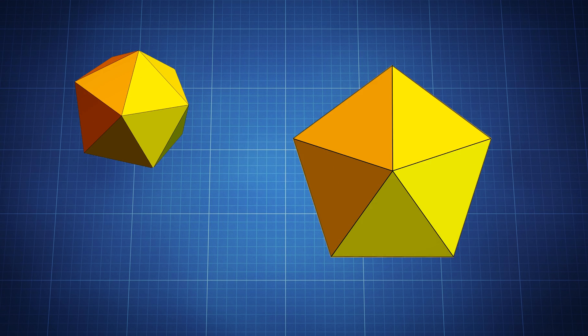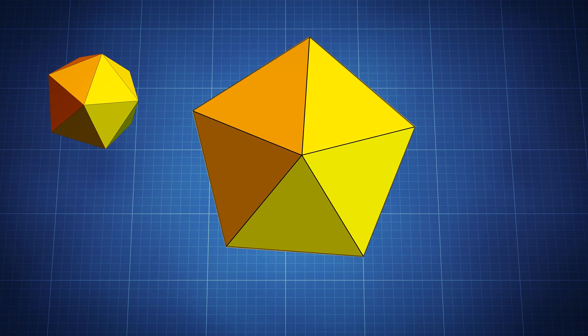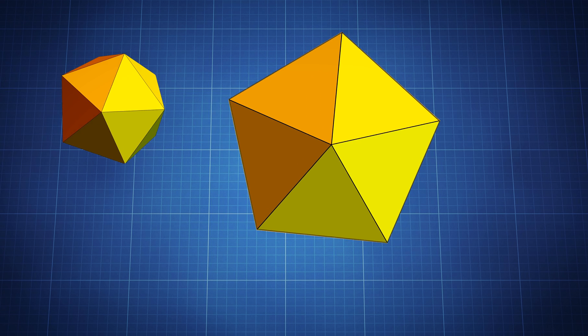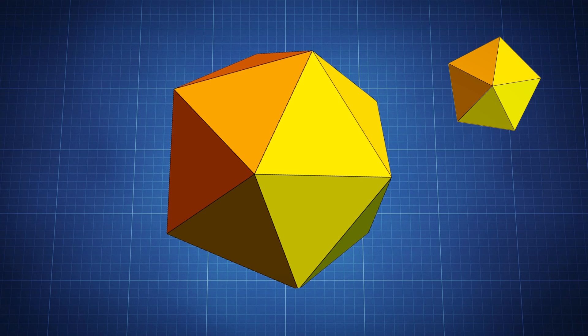So around every edge in this four-dimensional space there are five regular tetrahedra, and around every point or vertex there are 20 regular tetrahedra. And in 3D this is not the case.